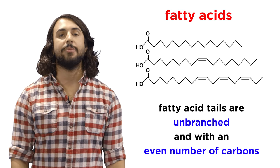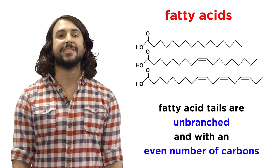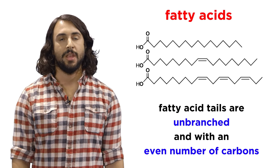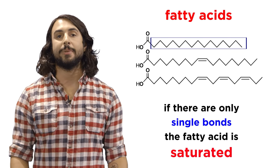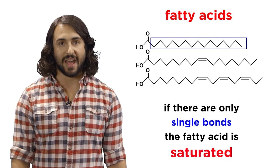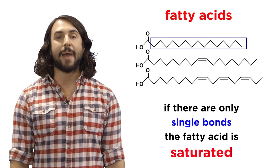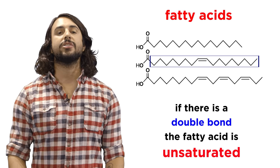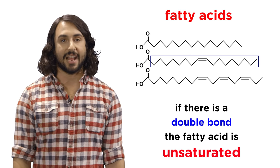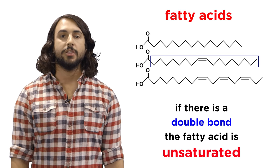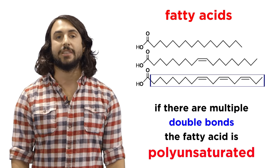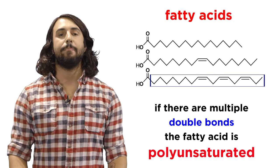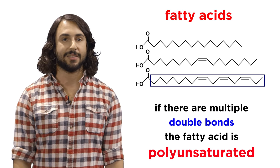Most of the time this tail is unbranched and contains an even number of carbons. If it contains all carbon-carbon single bonds this would be a saturated fatty acid because it contains the maximum number of hydrogen atoms possible. If there is a double bond it's an unsaturated fatty acid. Sometimes there are two or three double bonds which would make it a polyunsaturated fatty acid.